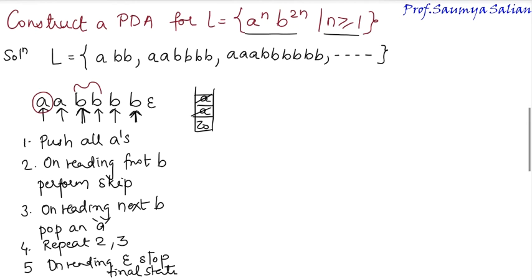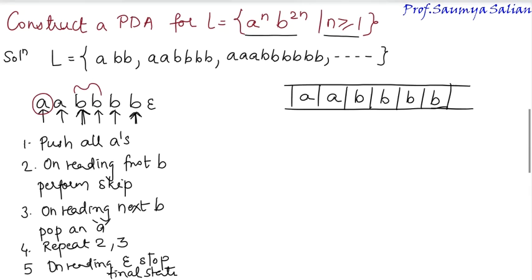Okay, so let's construct a PDA for this. Epsilon indicating that's the end of the string. Initially, I have Z naught as my initial symbol or bottom symbol of the stack. Starting from state Q0.